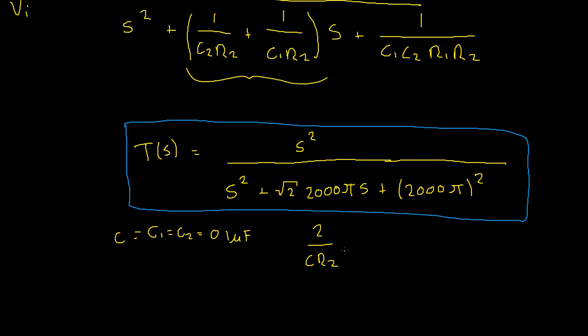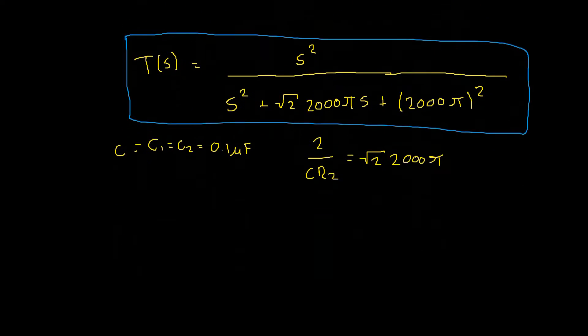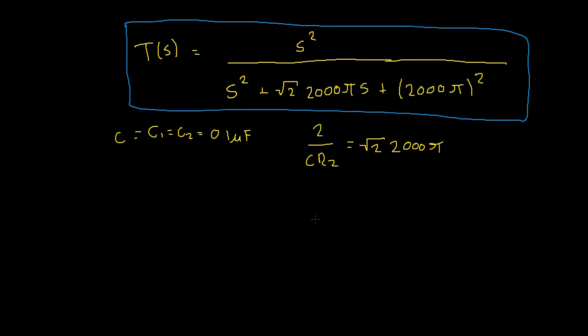Let's do that now. If we set this equal to the square root of 2 times 2000 pi, we're going to multiply through by our resistor R2 which gives us 2 equals root 2 times 2000 pi times R2, sorry 2 is divided by C,